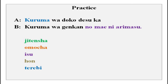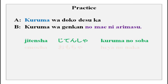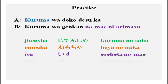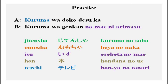Some more location references: kuruma no soba, heya no naka, erebeeta no mae (erebeeta is elevator), hon dana no ue (hon dana is a bookshelf), honya no tonari (honya is a bookstore), kaidan no soba (kaidan is stairs, soba is nearby). Some new words, some old — practice as described.